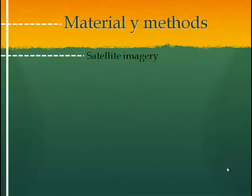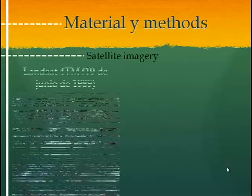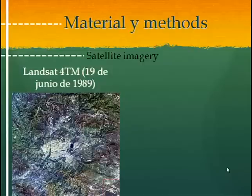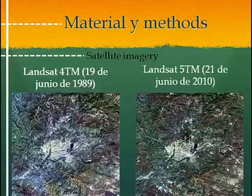Satellite imagery. We have used two Landsat images. The first one is from the 19th of June 1999. For that date, we mosaiced two images: one with path/row 203/30 and the other 203/31. We did the same with the second date image, which is from the 21st of June 2010.